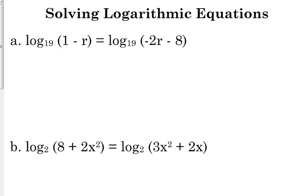We've got log base 19 on the right side, log base 19 on the left side. The only way that this equation is going to be true is if what's inside the logarithm on each side is equal to each other. So that's all you've got to do. All you have to do is set 1 minus r equal to negative 2r minus 8 and solve it.